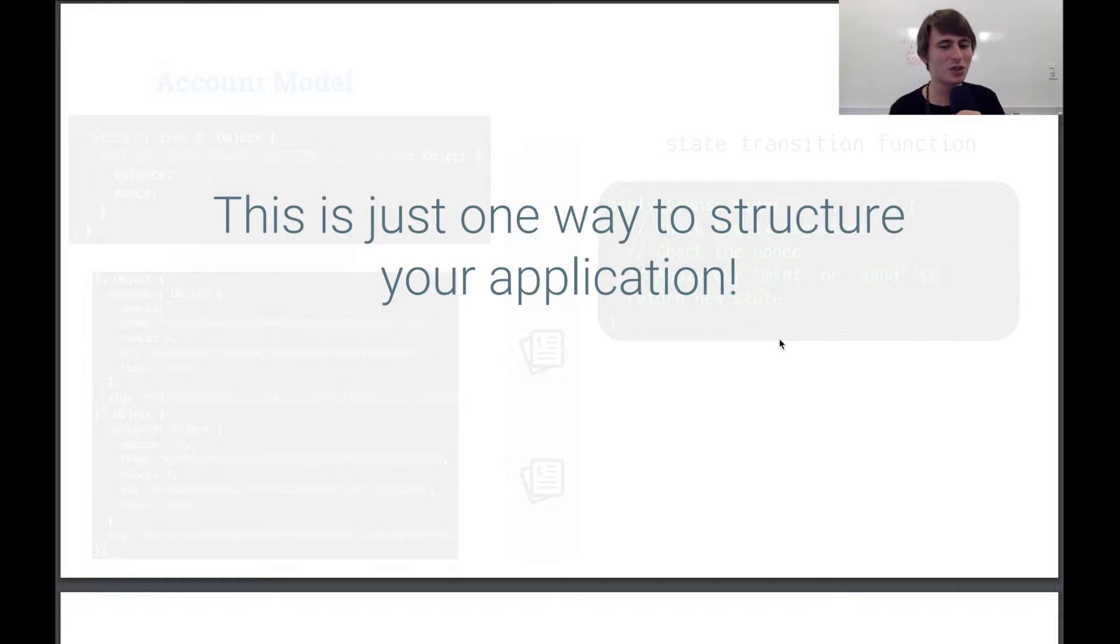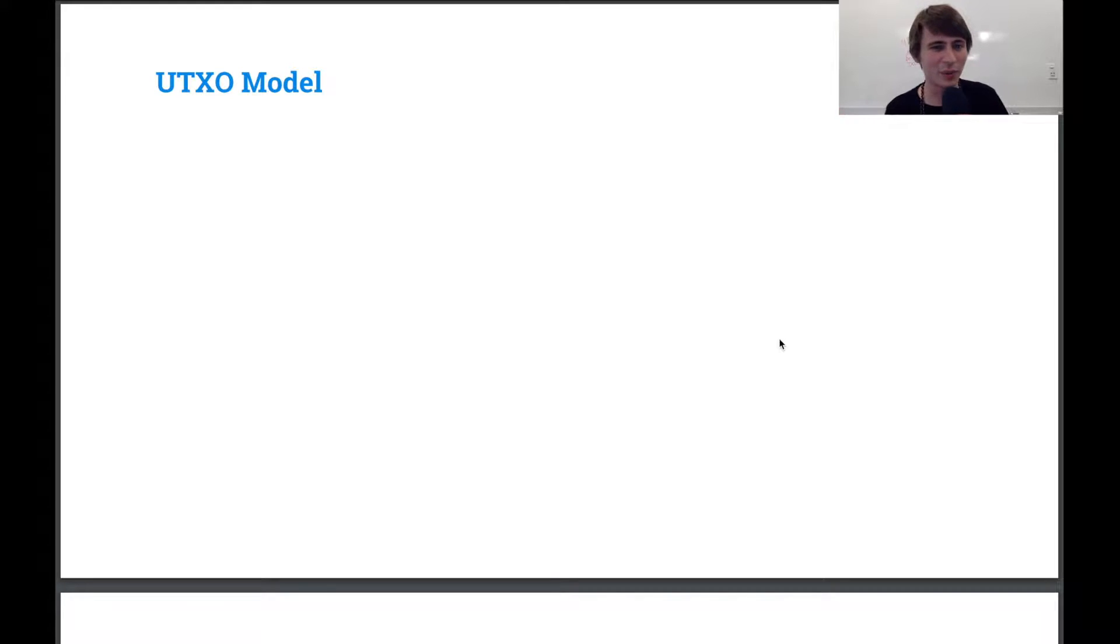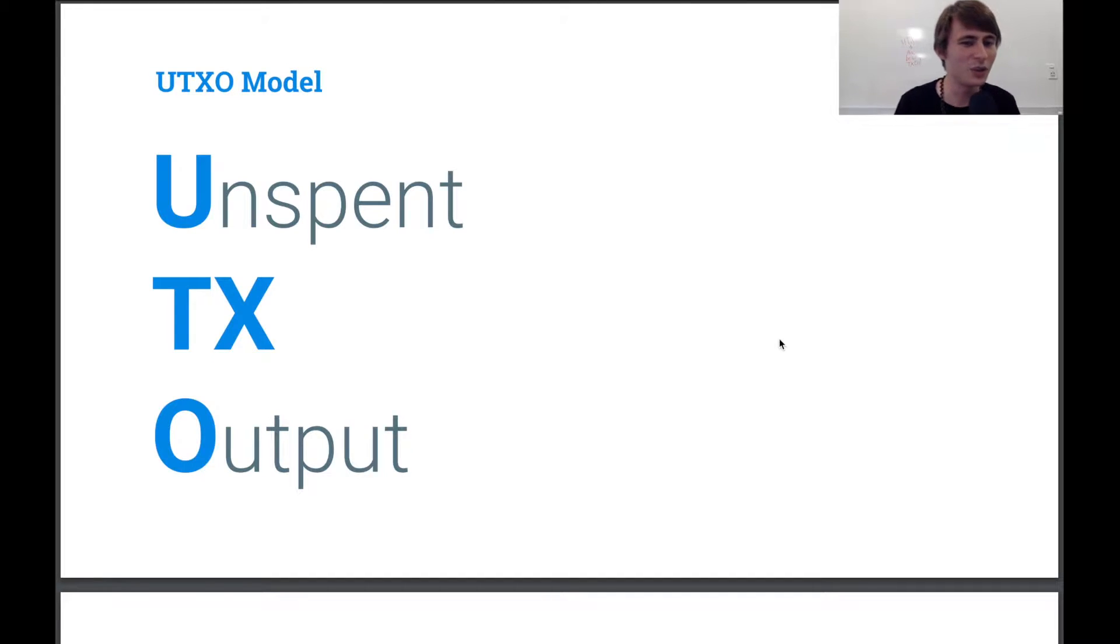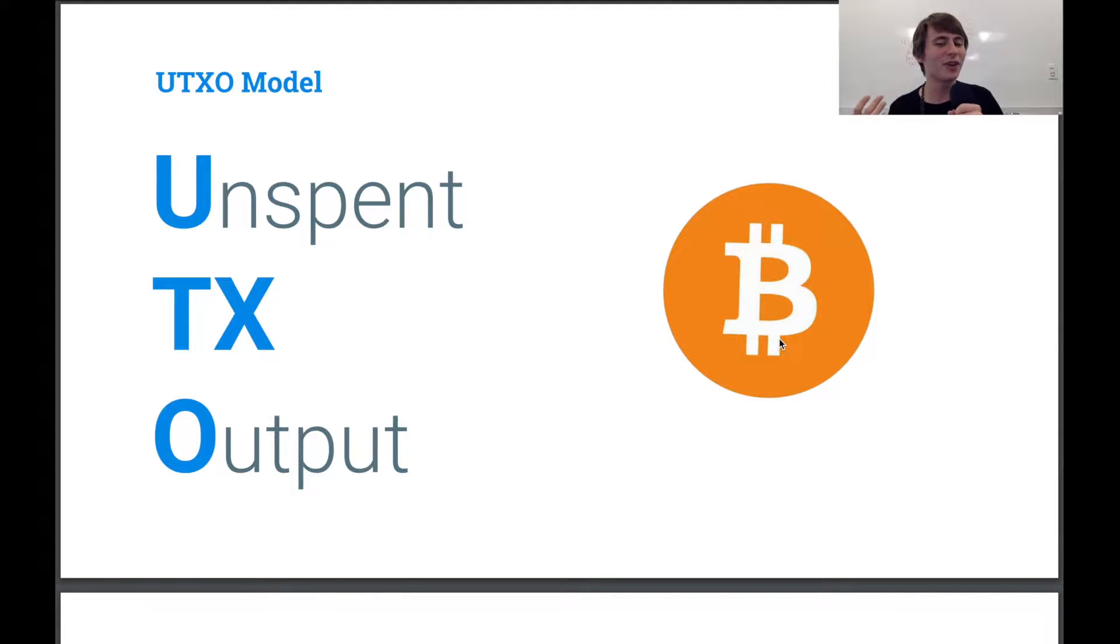But this is only one way to structure your application. There are many, many others. And so one other way is the UTXO model, which is unspent transaction output, and that was popularized with Bitcoin, which is a lot of the reason why we're talking about it.